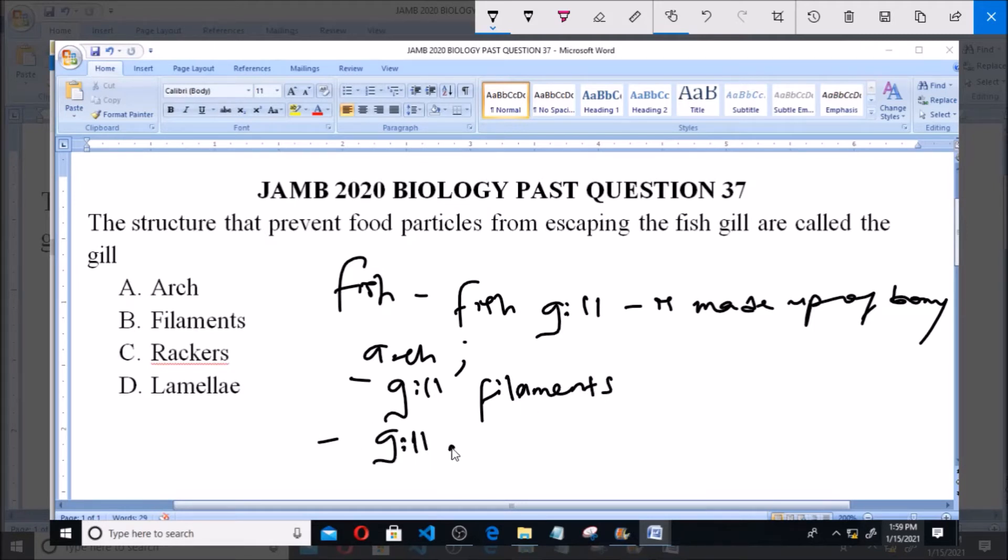and the gill rakers. The gill filament is the site of the gill that is responsible for gaseous exchange. This is where exchange of respiratory gases takes place